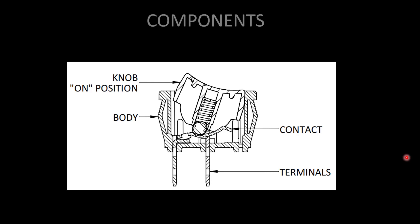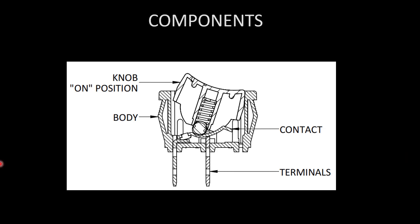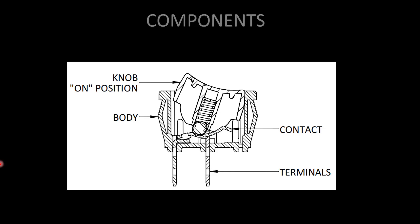What are the components of a switch? If you look at the internal structure of a switch, you can see a knob, body, contacts, and terminals. The knob is used to turn the switch on and off. The body provides housing for the other parts. Through the contacts, electricity will flow. Terminals are used for cable connection — we can connect electrical cables on the terminals.